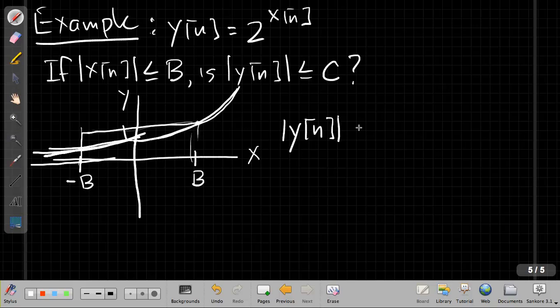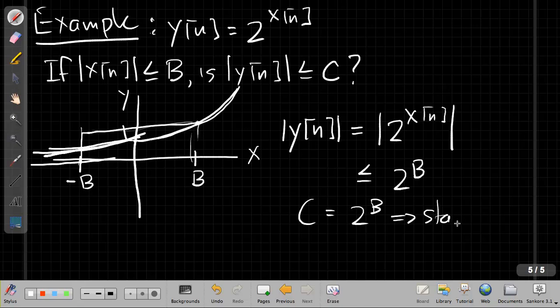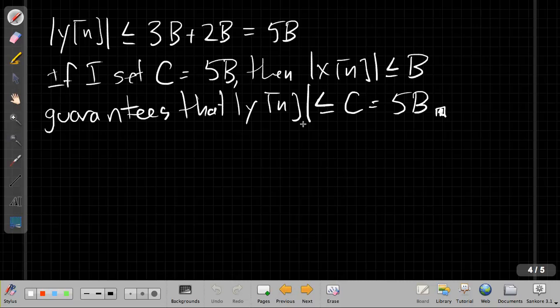I could pick this point here. And in fact, this one is pretty straightforward. If I say, what's the magnitude of y[n]? We can say that's the magnitude of 2 to the x[n]. And we can say, this has to be less than or equal to 2 to the B, because we know that x is less, we're assuming x is less than or equal to B. So we just set C equal to 2 to the B, and we've proven it's stable. So I should have done that on the previous page, too. I should have made it clear that this is saying the system is stable. So it's good to finish off your argument by stating clearly what you've shown.